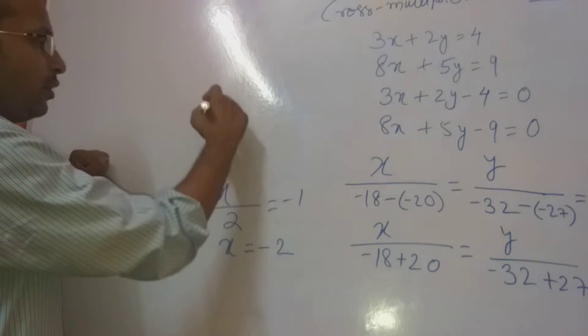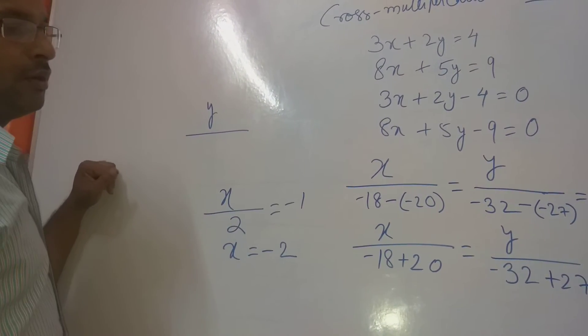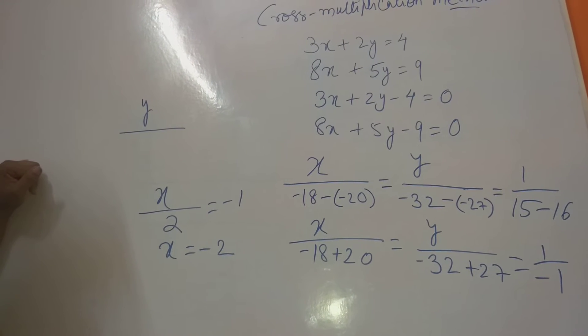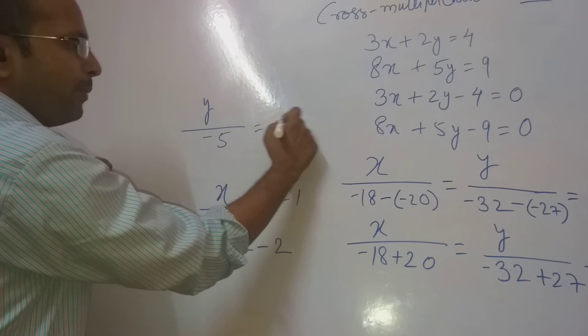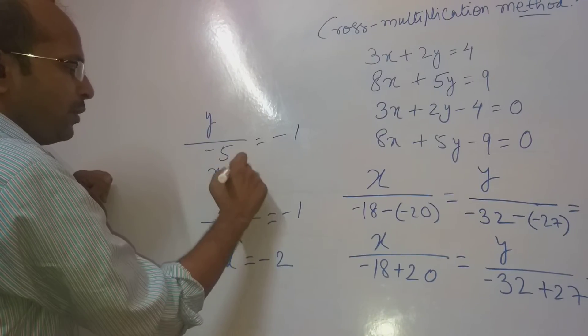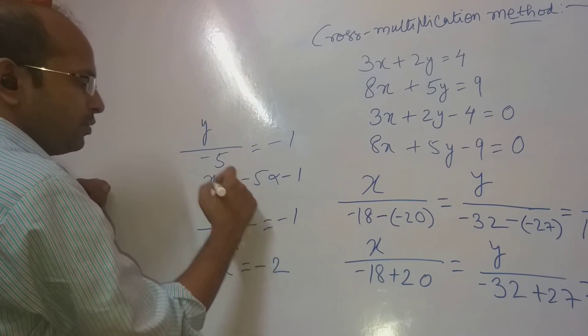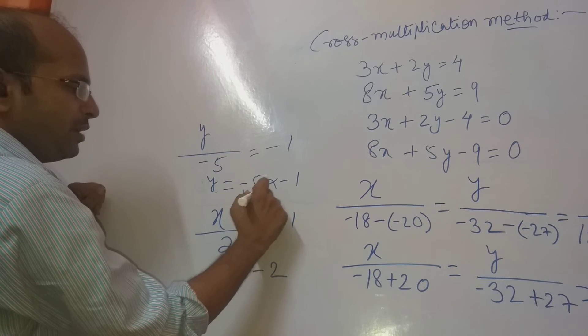And then, y by minus 32 plus 27 will become minus 5, equals minus 1. So y will be minus 5 into minus 1. So y will be 5.